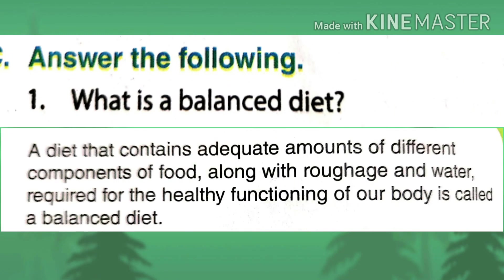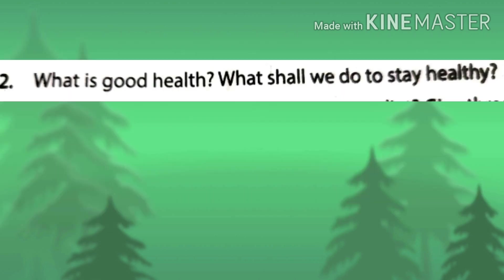Now let's start with short answers. First: what is a balanced diet? A diet that contains adequate amounts of different components of food along with roughage and water, required for healthy functioning of our body, is called a balanced diet. Our diet must include carbohydrates, fats, proteins, vitamins, and minerals along with water and roughage in proper amounts.